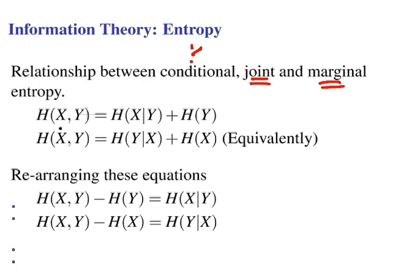We have an expression that the joint entropy H(X,Y) is the conditional entropy plus the marginal entropy. Equivalently, you can swap X and Y around and get the same expression here. It's a direct equivalent to the other.